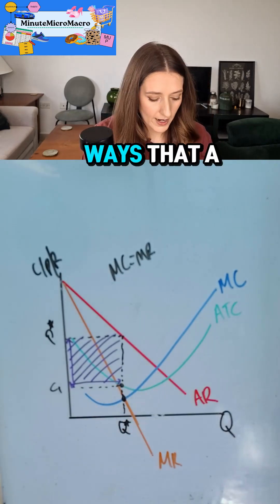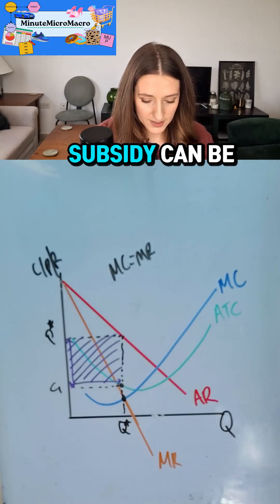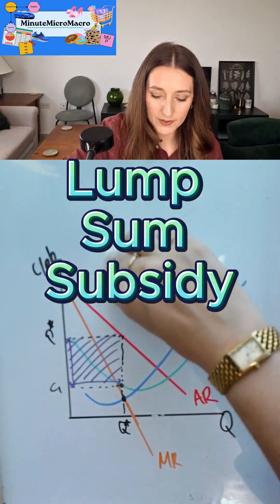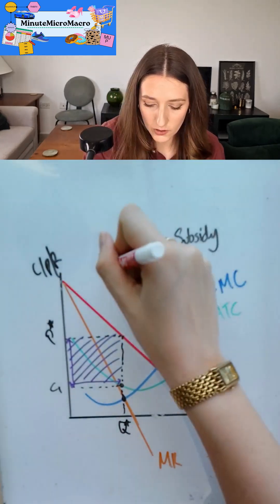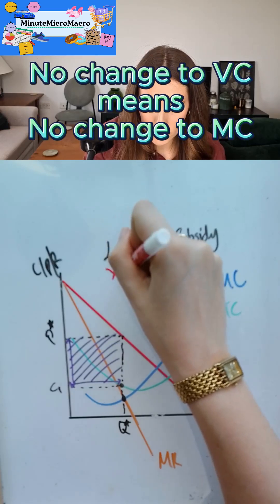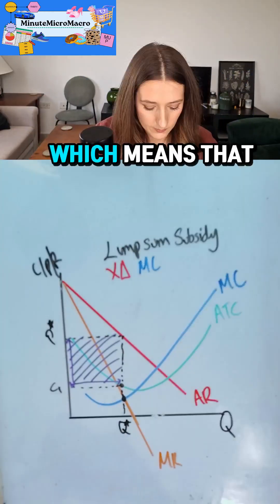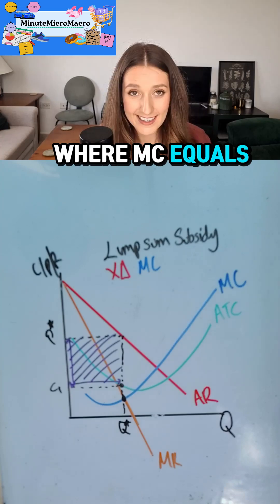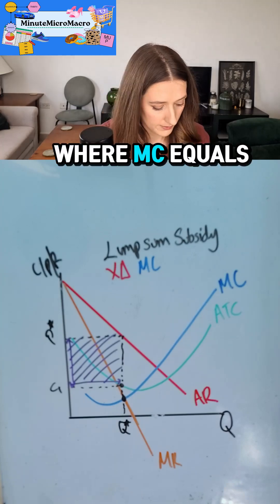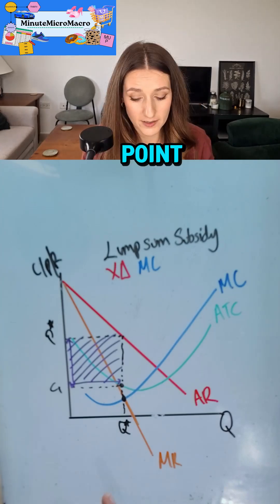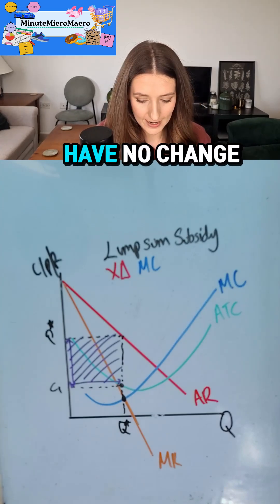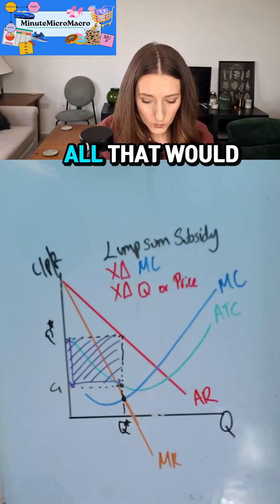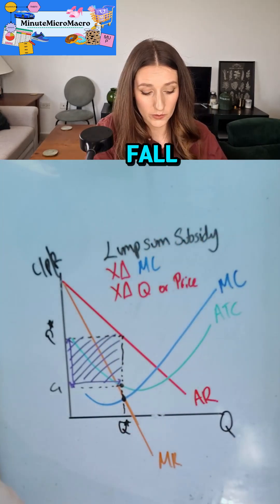Now there are two different ways that a subsidy can be given. We could have a lump sum subsidy given. This would cause no change in marginal cost, which means there'll be no change in the point where MC equals MR. If there's no change in the profit-maximizing point, we're going to have no change in quantity or price. All that would happen is average total cost would fall.